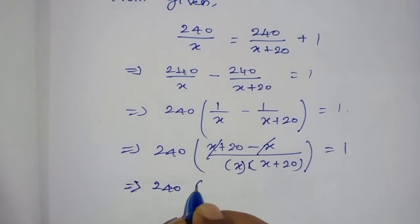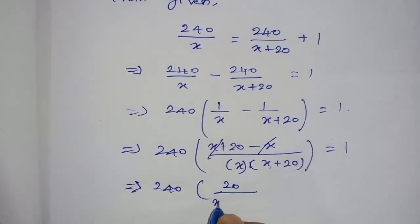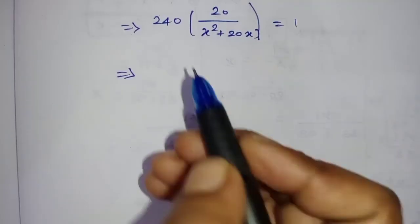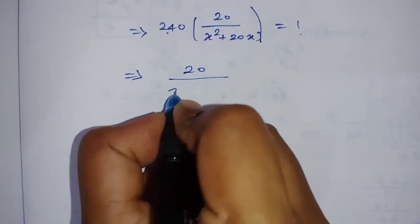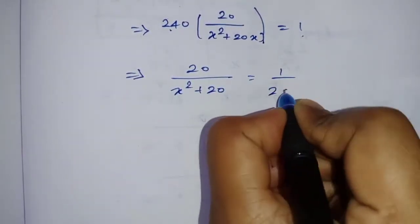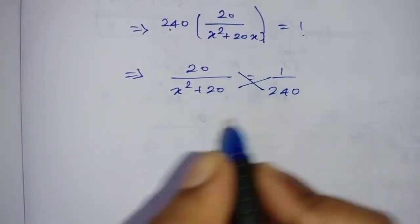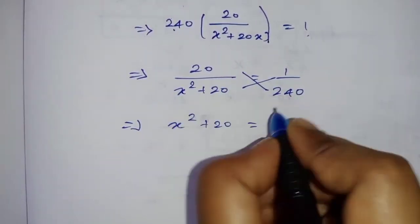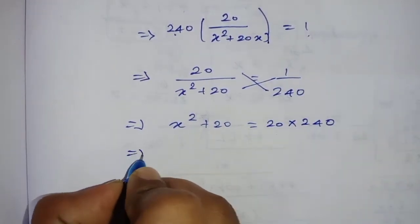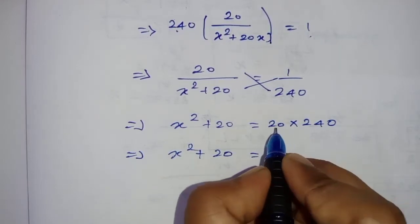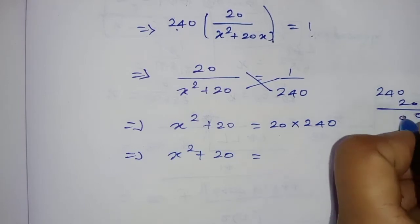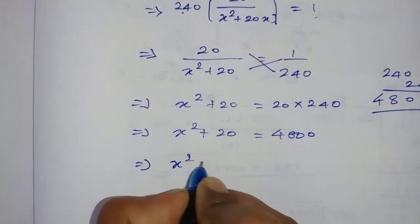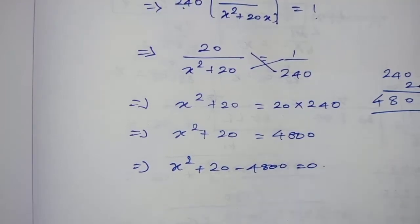Simplifying further: 240 times 20 divided by x times (x plus 20) equals 1, which gives 4800 divided by x squared plus 20x equals 1. Cross multiplying: x squared plus 20x equals 4800. Rearranging: x squared plus 20x minus 4800 equals 0.